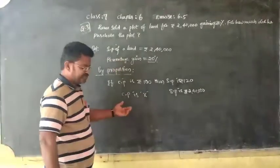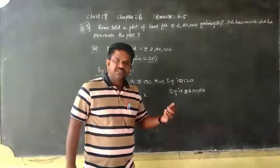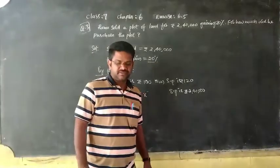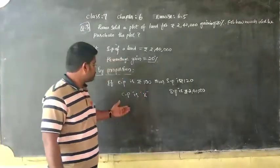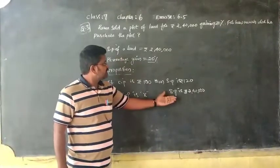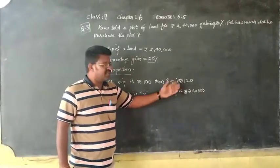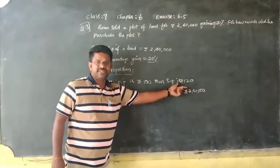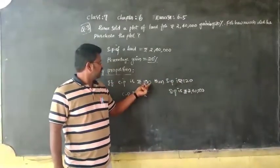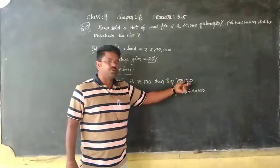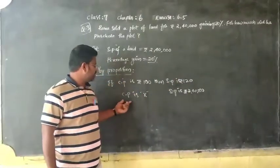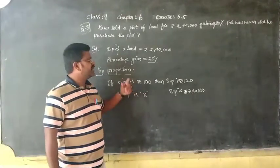So here, cost price and selling price are in direct proportion. Why? Because if the cost price increases, the selling price also increases. If 100 rupees, then selling price is 120 rupees. If it is 200 rupees, the selling price is 220 rupees. Like that. So the CP and SP are in direct proportion.